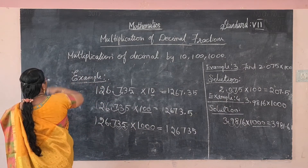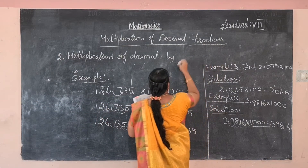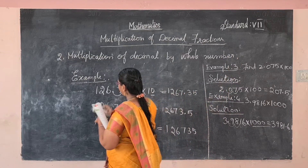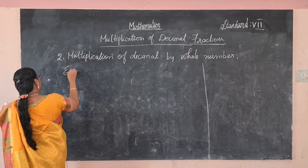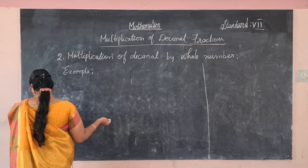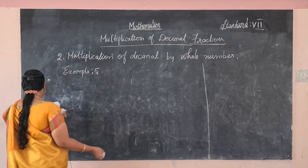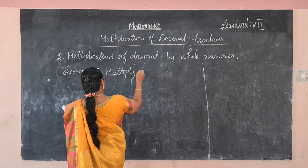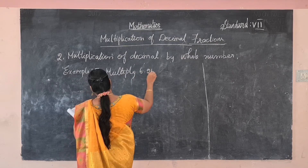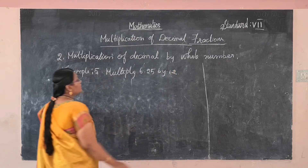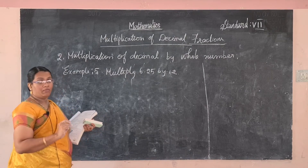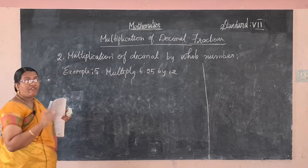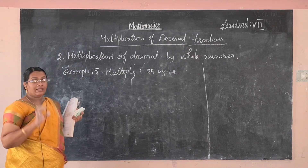Now let's look at the second type: multiplication of a decimal by a whole number. In this method, during multiplication do not consider the decimal point. Finally, we apply the decimal point at the end.